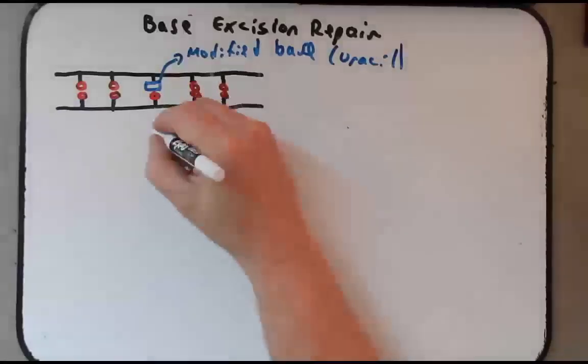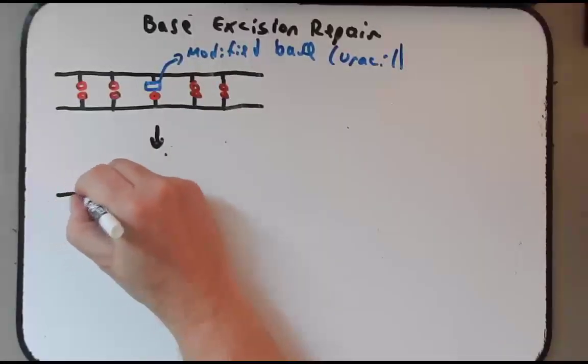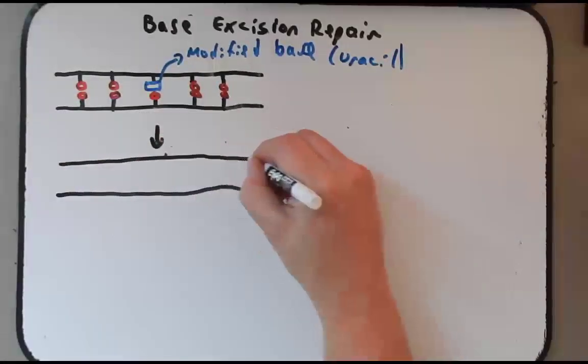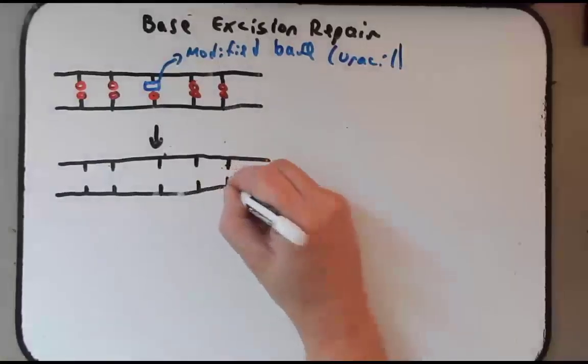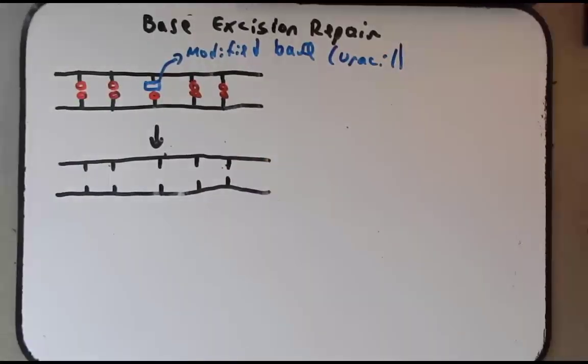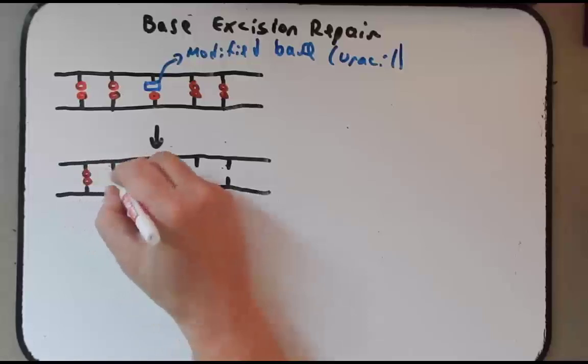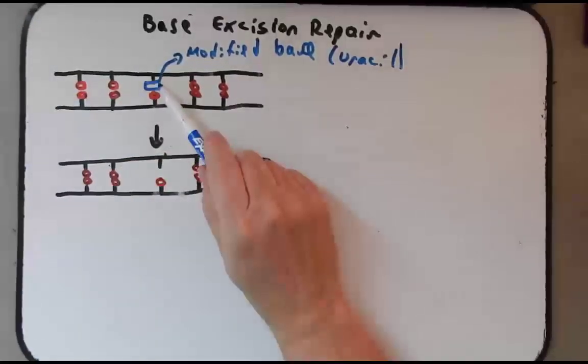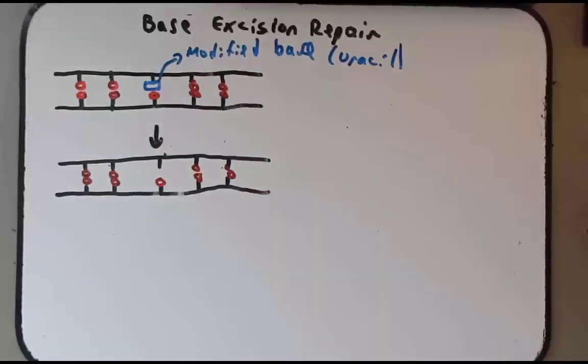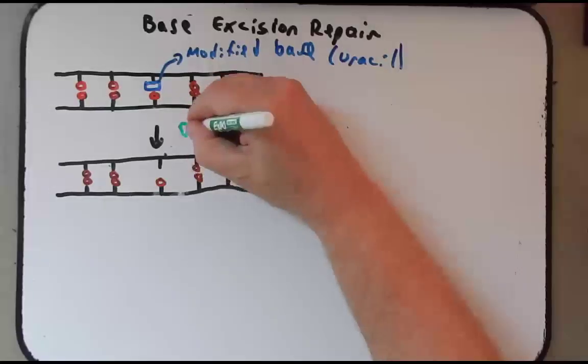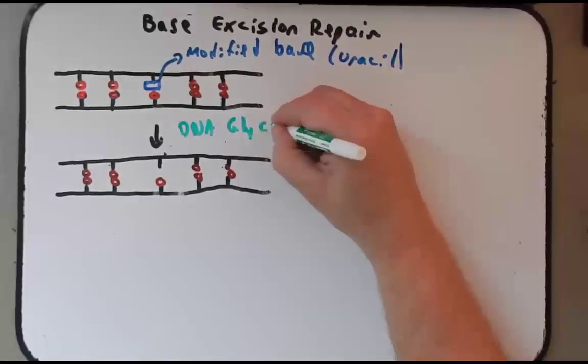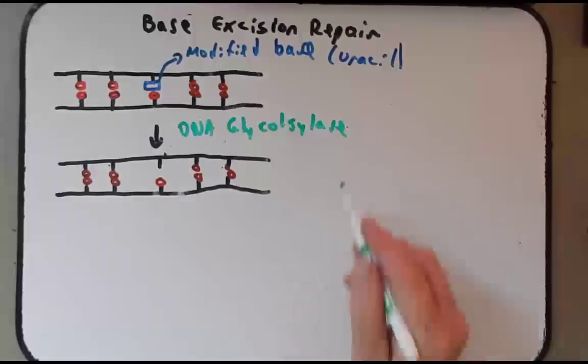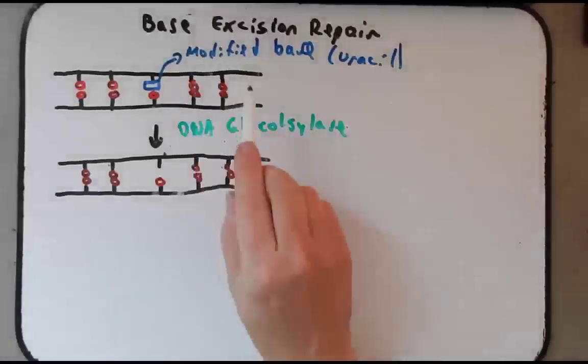Now the name says base excision repair. So the first thing it's going to do as the name implies is it's going to get rid of the base and only the base. In this example only the base of the distorted one. All the other bases are going to remain here and they're going to be fine. But this distorted base has now been removed and it gets removed by an enzyme called DNA glycosylase.